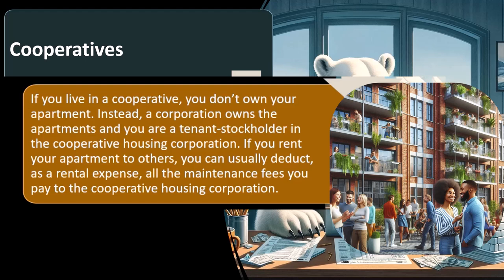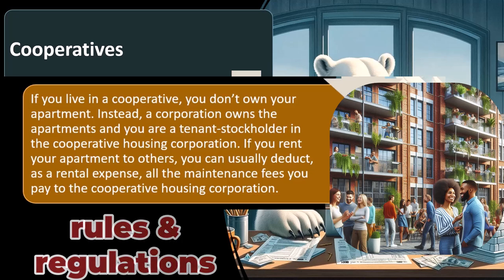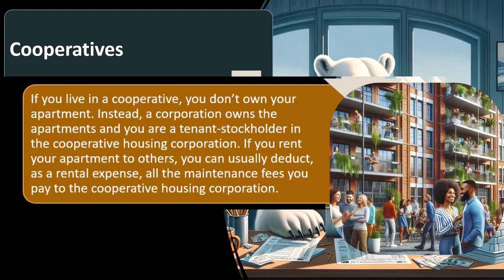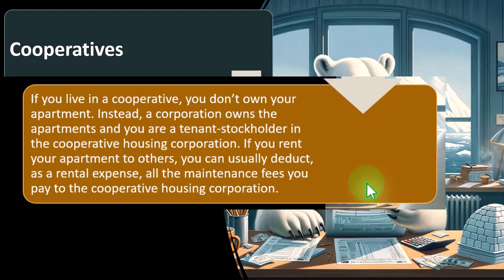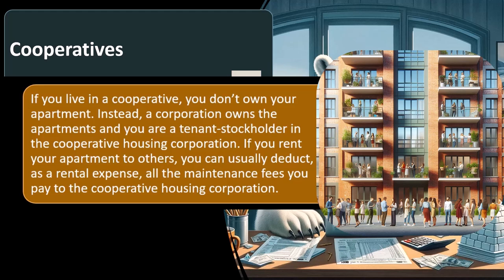This is a good example of why simple rules related to taxes and government regulations can have unintended consequences in the business world, limiting how people set up organizations. When the rules were set up, they had a particular standard organizational structure in mind, which might not be the most optimal depending on your needs. If you live in a cooperative, you don't own your apartment. Instead, a corporation owns the apartment, and you are a tenant stockholder in the cooperative housing corporation — basically owning shares representing unit ownership.